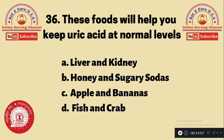Question 36: These foods will help keep uric acid at a normal level — A. Liver and kidney, B. Honey and sugary sodas, C. Apple and banana, D. Fish and crab. The food which keeps uric acid level under control, recommended for gout patients, is option C — apple and banana. All other listed foods should be avoided.